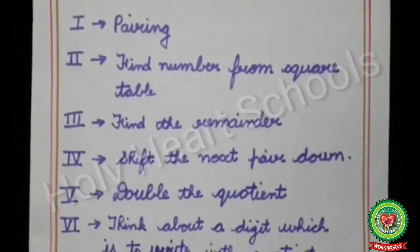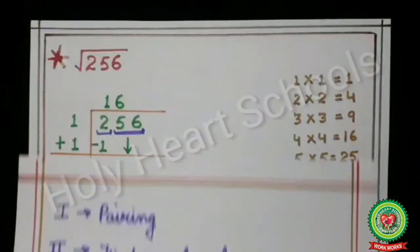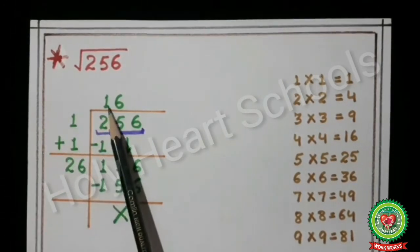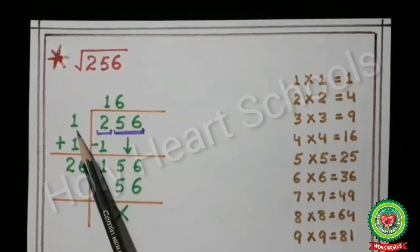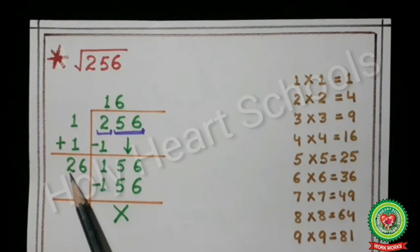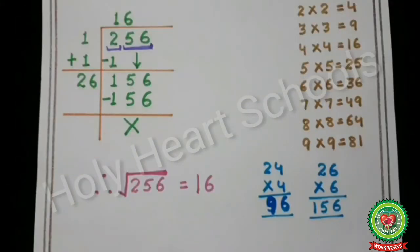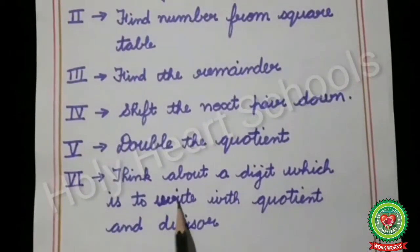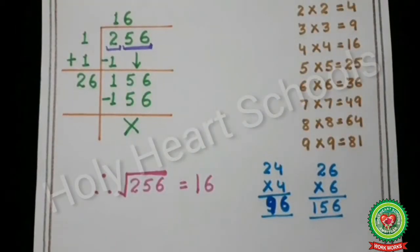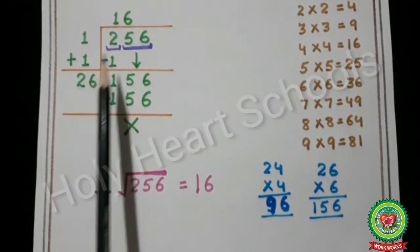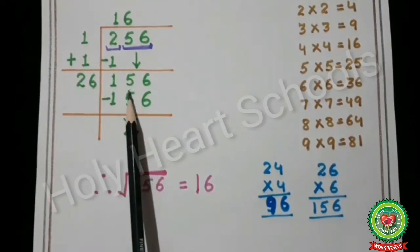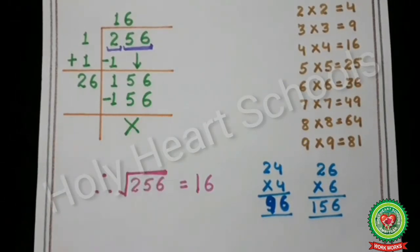The next step is to double the quotient. Add the last digit of the quotient to the divisor: our divisor is 1 and the digit is 1, so 1+1=2. The next step is to think about a digit to write with divisor 2 and quotient 1, such that when the digit and divisor are multiplied we get a number equal to 156 or just less than 156.